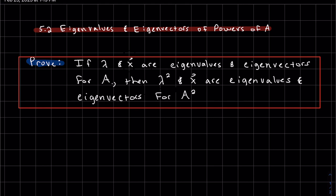So we're going to first start off by proving if lambda and x are the eigenvalues and respective eigenvectors for A, well then lambda squared and x are eigenvalues and eigenvectors for A squared. And the prove part, we want to prove the then part.